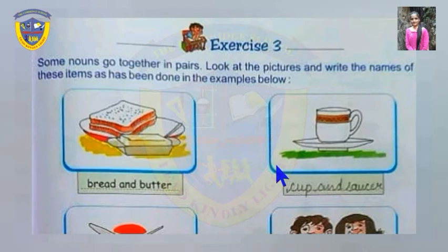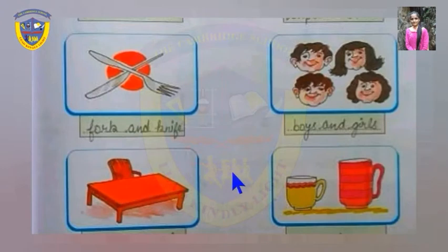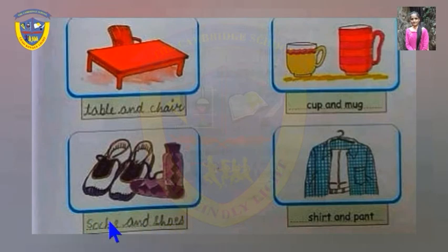In the second picture, the answer is 'cup and saucer' — saucer is the plate-like thing, spelled S-A-U-C-E-R. Don't misspell it. Other answers include: fork and knife, boys and girls, table and chair, cup and mug, socks and shoes — socks spelled S-O-C-K-S — and shirt and pant.